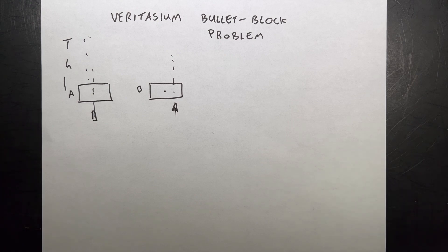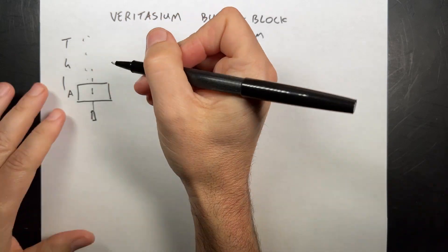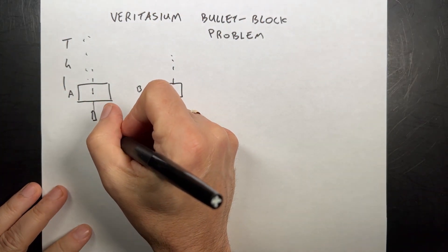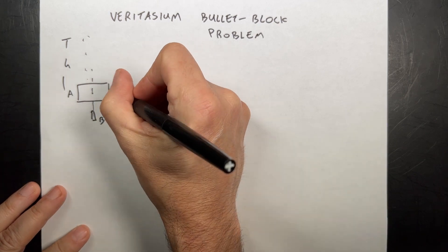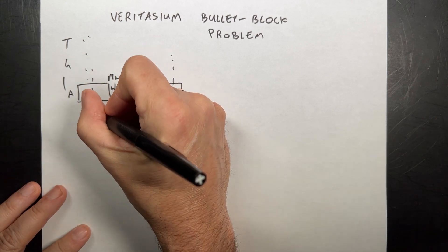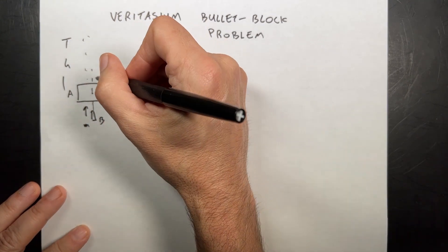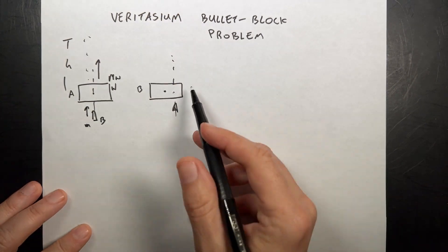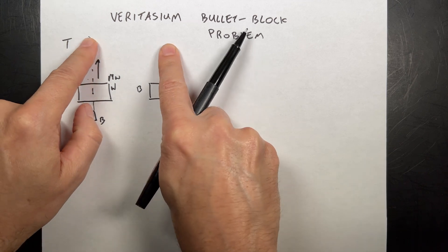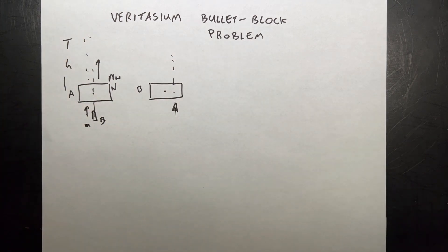Back to the paper. I'm going to change the problem because I don't care about how high they go. They go the same height, which means the velocity of the center of mass of both objects right after the collision is the same — and that's why they go the same height. So I don't want to talk about gravity; I'm going to change the problem and make my own version.